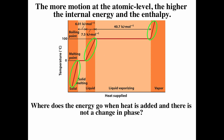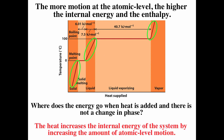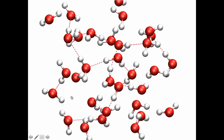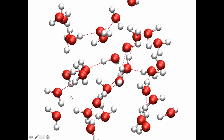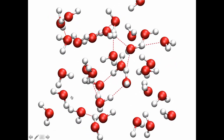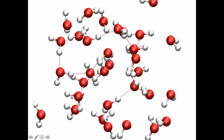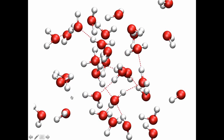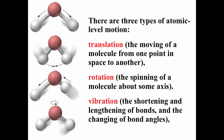Where does heat go when it's added and there's no change in phase? Heat goes into the internal energy of the system, increasing atomic-level motion. There are three types of atomic-level motion: translation, rotation, and vibration. This animation of water at 205 degrees Celsius — slowed down dramatically — shows water molecules exhibiting translational motion, rotational motion, and vibrational motion. This is where heat goes when you're heating an object.